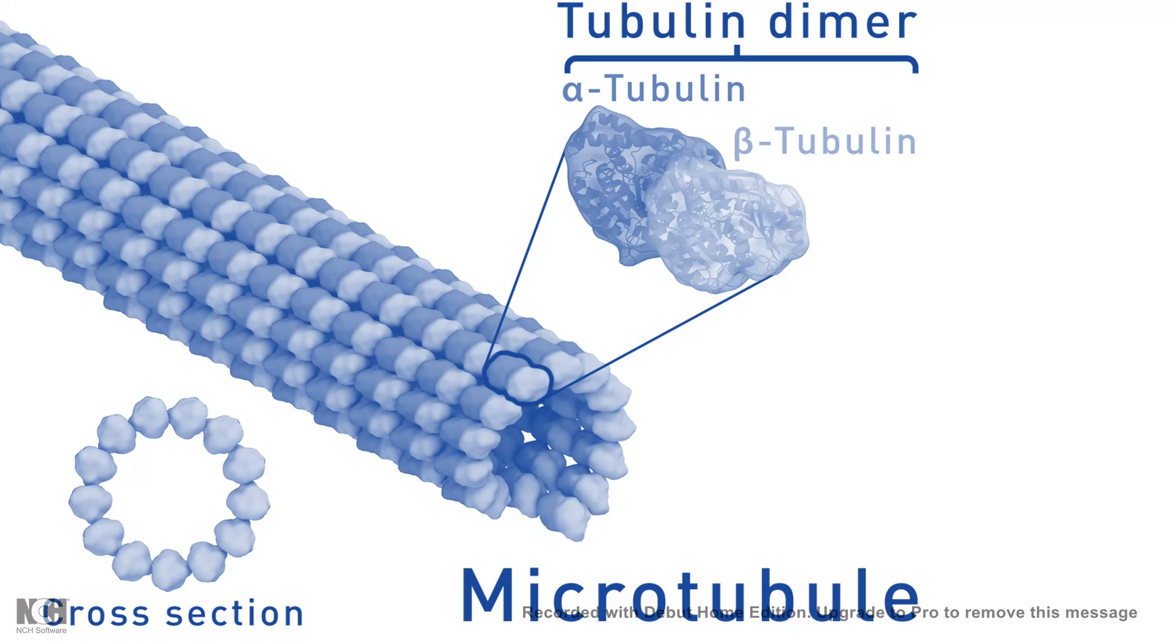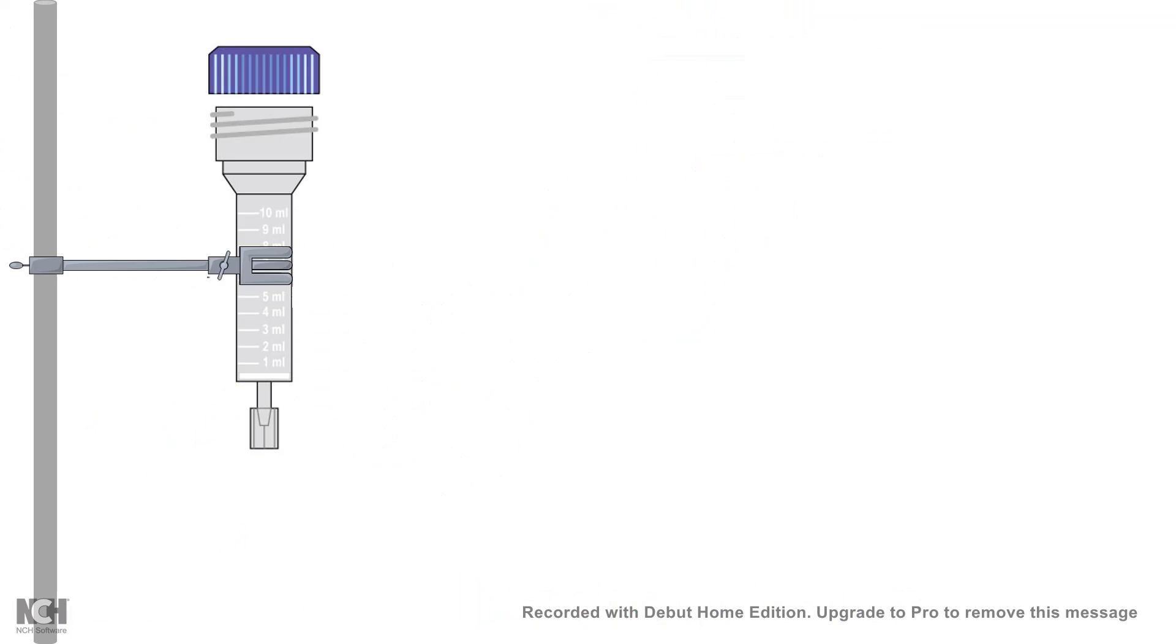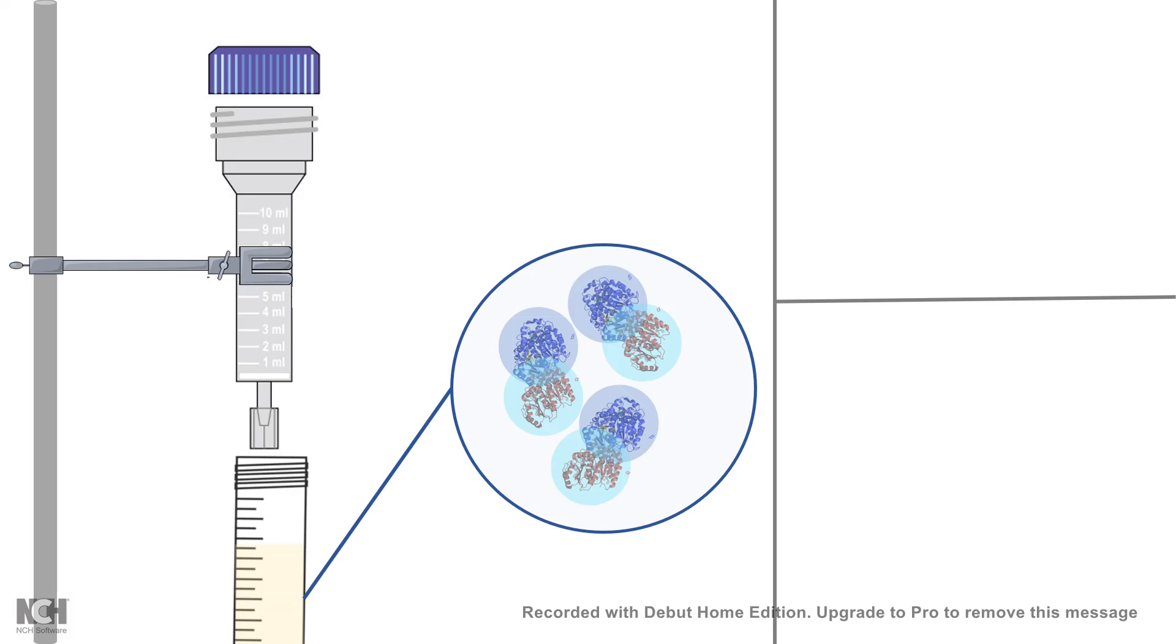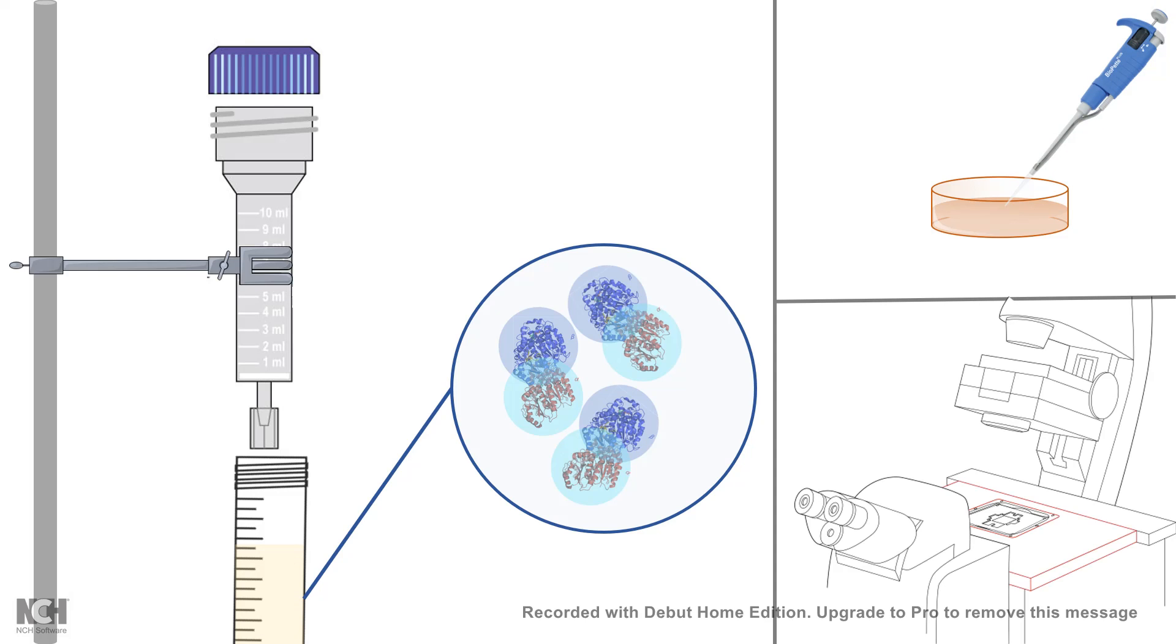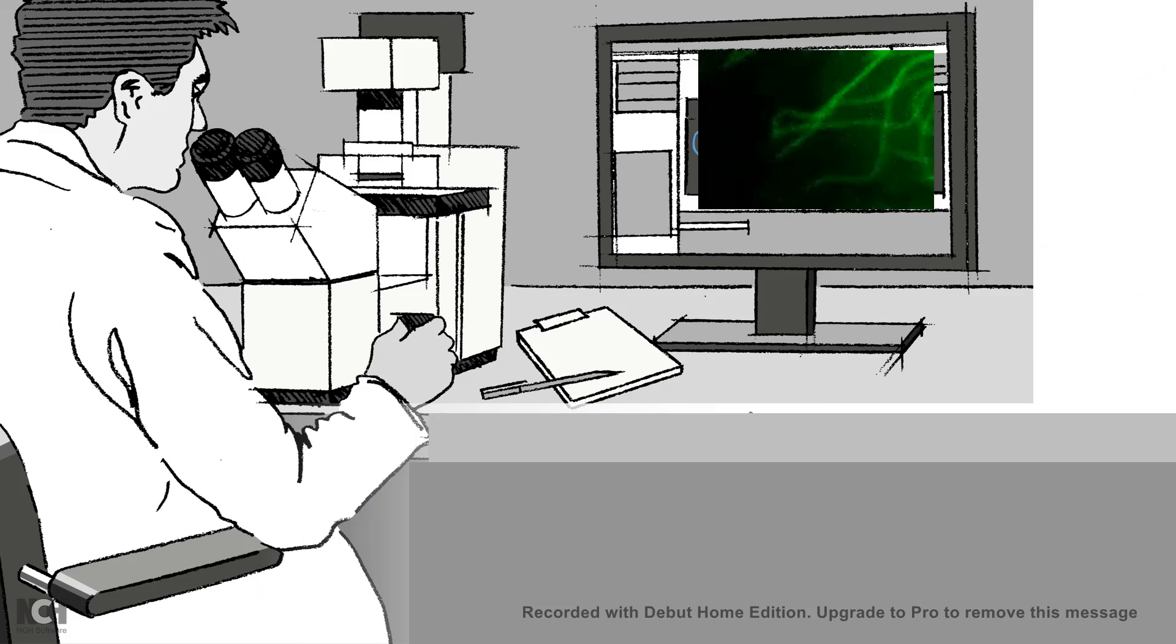So we know already that microtubule is made up of tubulin dimers, alpha and beta tubulin. We can purify the tubulin and from this purified tubulin we can allow them to polymerize in vitro. And with high resolution microscopy and with high precision microscopy, we can follow the dynamics over time.